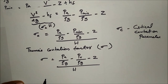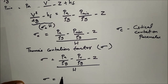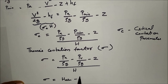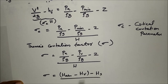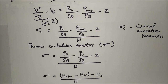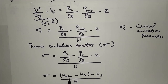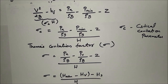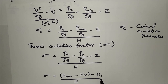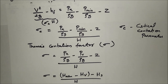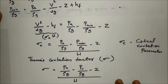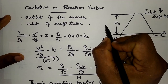This can be written in another form as σ = (H_a − H_v − H_s) / H, where H_a is the atmospheric pressure head, H_v is the vapor pressure head, H is the net head, and H_s is the height of the turbine runner above the tail race, represented by z.